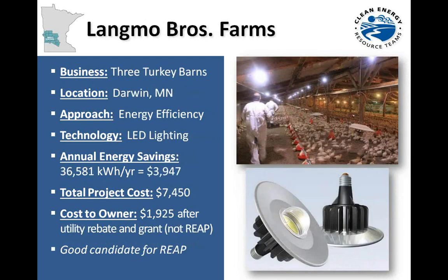The next project was not a REAP project but is a good candidate. This is Langmuir Brothers Farms in Darwin, Minnesota, which upgraded three turkey barns with LED lights. They installed 12-watt LED lighting from Once Innovations, based in Plymouth, with a unique sunrise and sunset feature to encourage birds to eat more. Most turkey producers have lights on 12 to 24 hours a day, which incurs significant cost with incandescent or high-pressure sodium fixtures. Annual energy savings were $3,947. Total project cost was $7,450, and cost to the owner was $1,925 after a utility rebate.